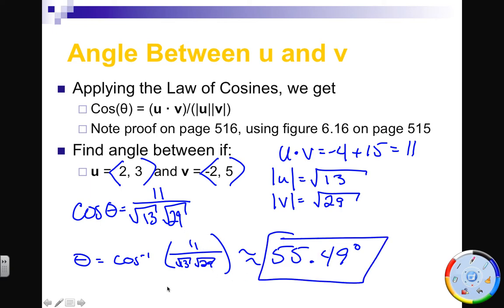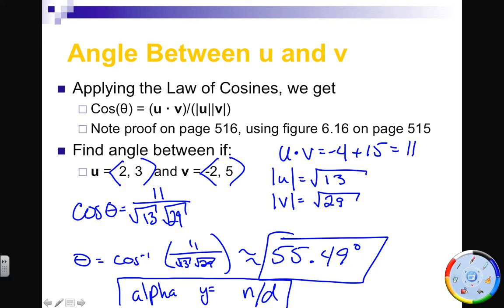A calculator tip: if you hit alpha then y-equals, it will bring up a menu and you want n/d — it will make a fraction bar for you, so you can make sure you get things in the right spot for this fraction and can actually see the denominator. The angle between two vectors is not too challenging — a simple cosine problem using the dot product and the magnitudes of the two vectors.